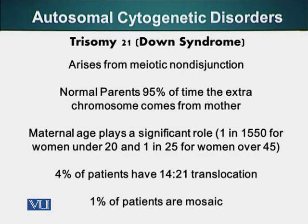The disorder we are going to talk about is the most common type of autosomal aneuploidy — trisomy 21, also referred to as Down syndrome. It arises from meiotic non-disjunction in normal parents. In 95% of the time, the extra chromosome comes from the mother.